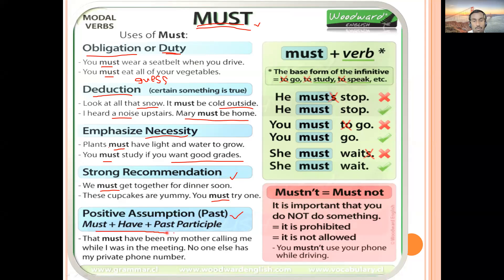There is also a positive assumption structure using 'must have' plus past participle. Example: 'That must have been my mother calling me while I was in the meeting — no one else has my private phone number.' Here the speaker was in a meeting, missed the call, and guesses it must have been from their mother. This is a past assumption with 'must have' plus V3.